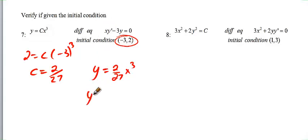We need a y prime. So y prime is going to be, well, drop down the 3, and the 27 is going to be 2 over 9, x squared.